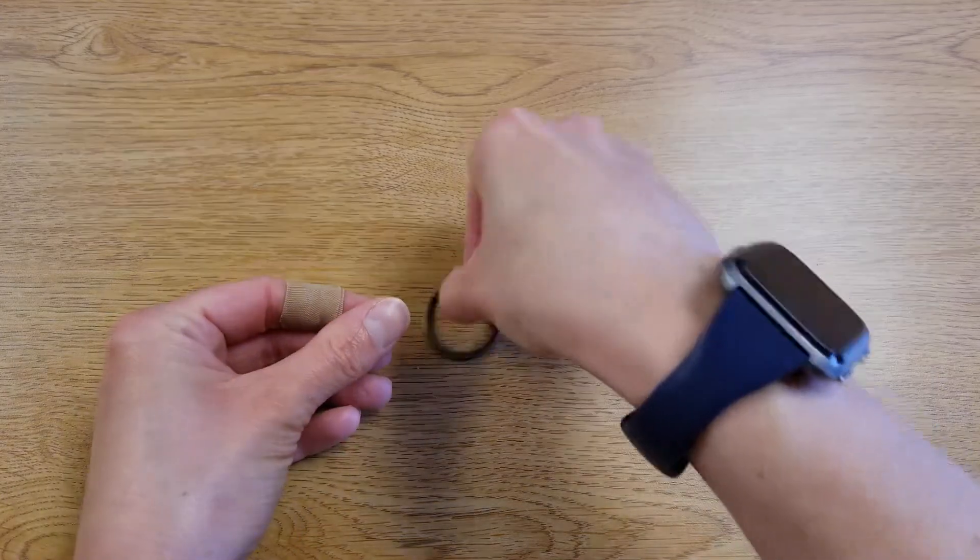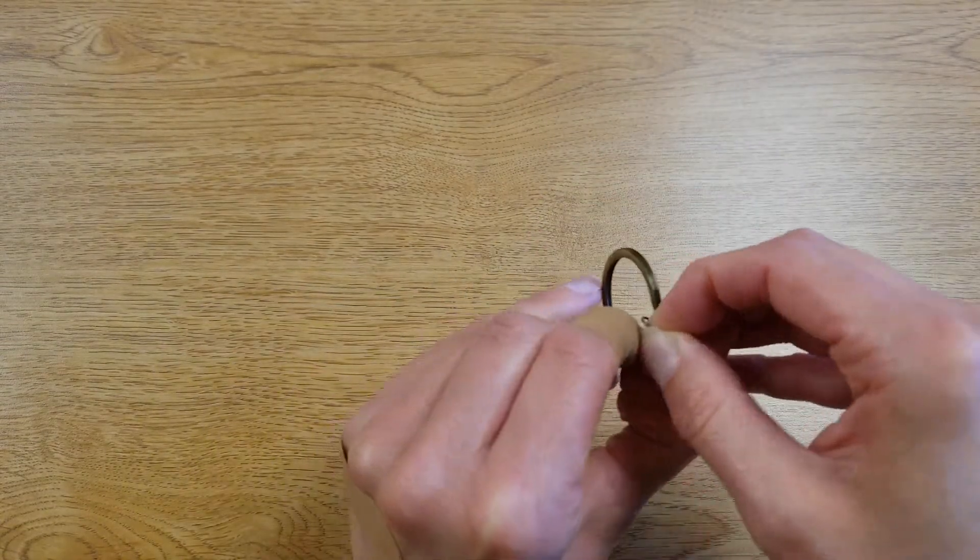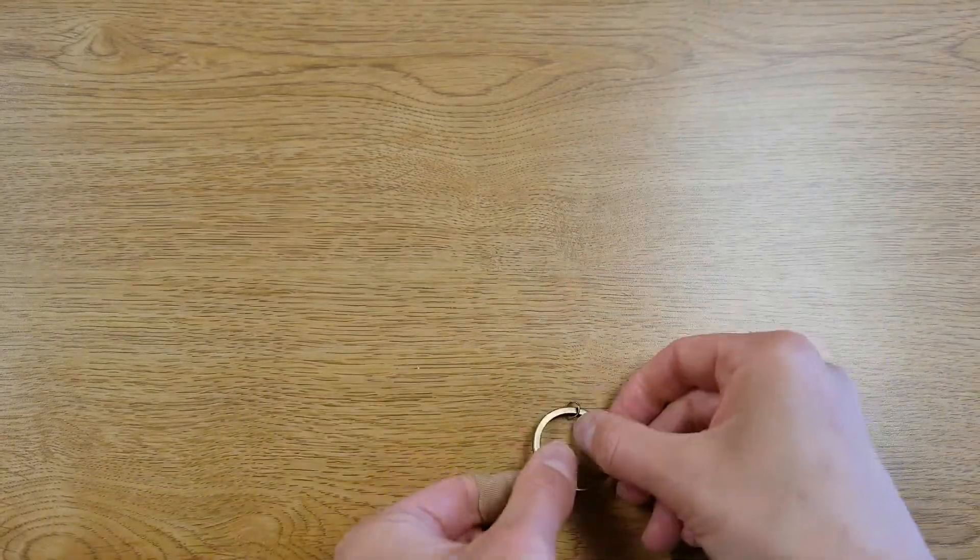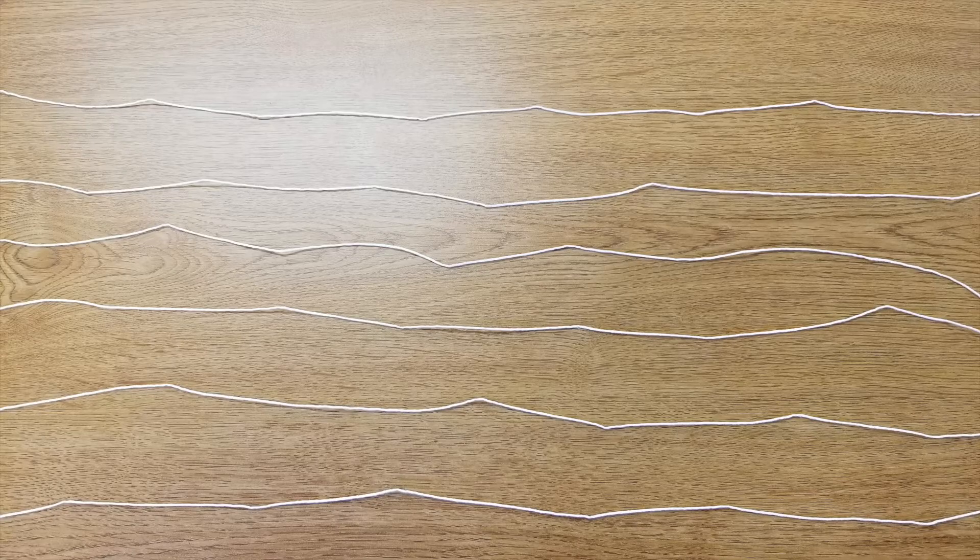Grab your keyring and your jump ring. We'll open up the keyring and slide the jump ring on it. Next, take your cord and cut it into six even lengths that are approximately a yard each, so 36 inches.